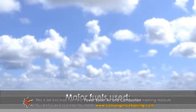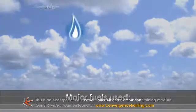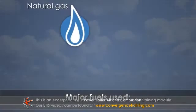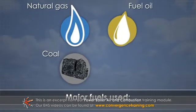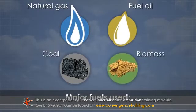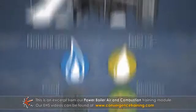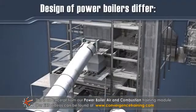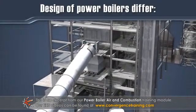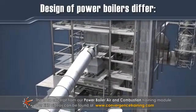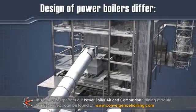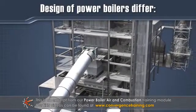The major fuels used in the power boiler are natural gas, fuel oil, coal, and biomass. Design characteristics of power boilers differ depending on the fuel burned. These characteristics include: